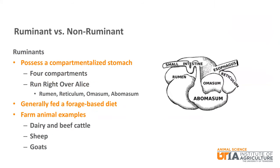You will often hear that ruminants have four stomachs — that is not true. They have one stomach with four compartments: the rumen, reticulum, omasum, and abomasum.